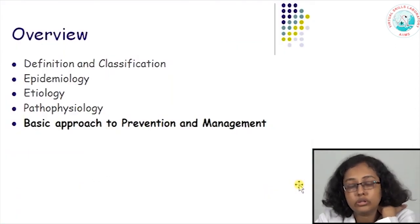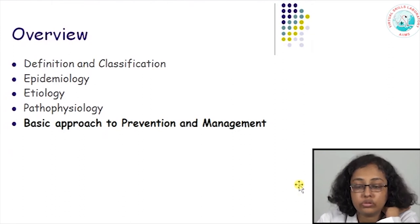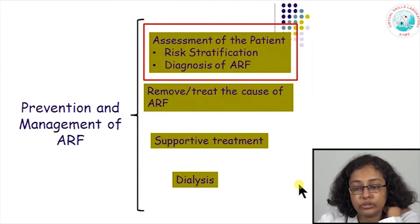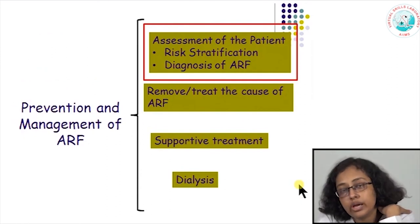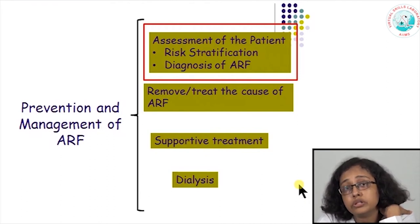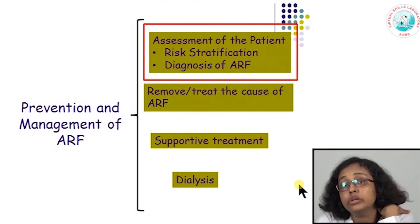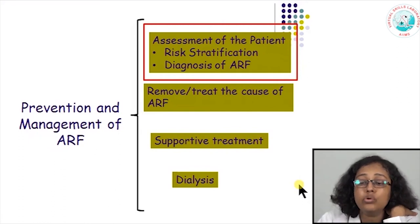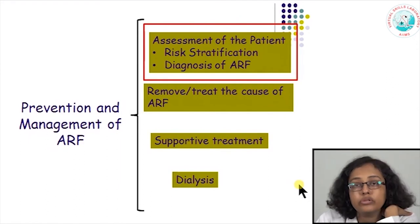Having understood the common causes and how they lead to acute renal injury, let us look at the basic approach to prevention and management. Prevention and management starts with assessment, risk stratification, and diagnosis. Even before the patient actually develops acute renal failure, you start management by looking for risk factors, then remove those risk factors if possible, treat the causes, give supportive treatment, and if nothing else works, the patient needs dialysis.